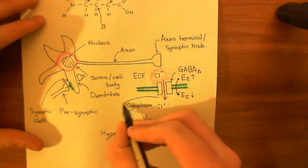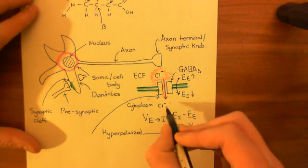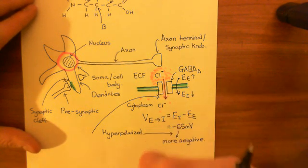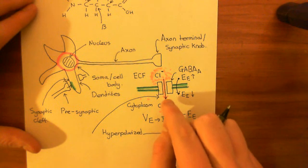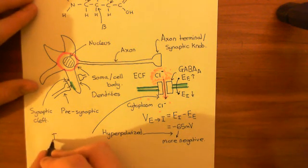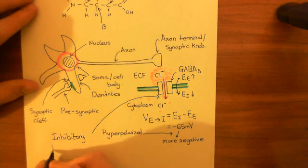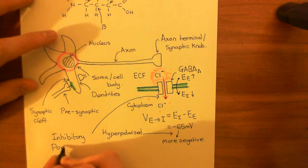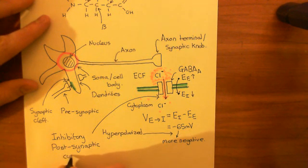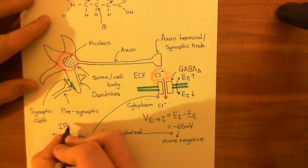This is known as an inhibitory postsynaptic current. When you bring in this negative charge through the GABA-A receptor into the cytoplasm, you are moving charge across the membrane. When charge is moving, that's known as a current — and it's an inhibitory current because it's negative charge being brought in. It's postsynaptic because it's occurring in the postsynaptic cell. So this is abbreviated to IPSC.